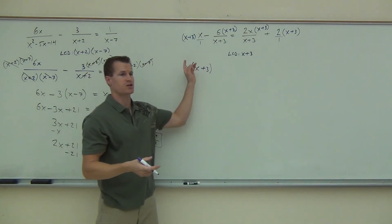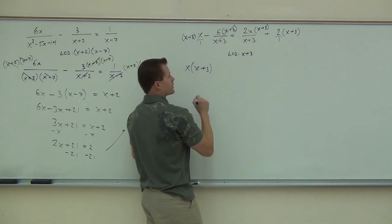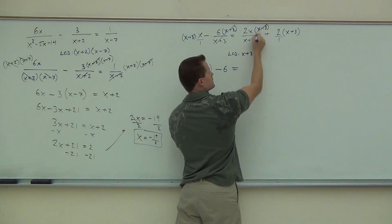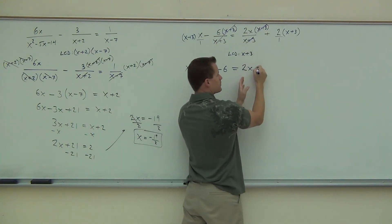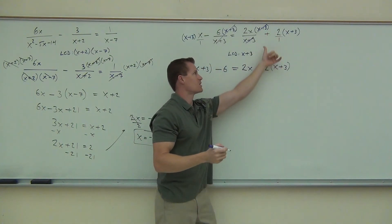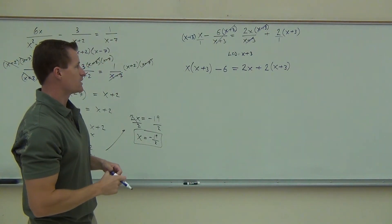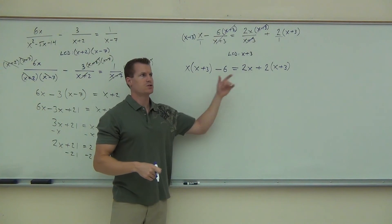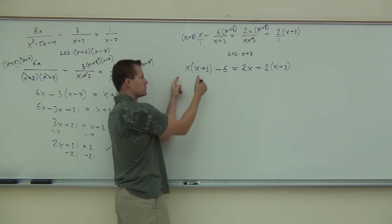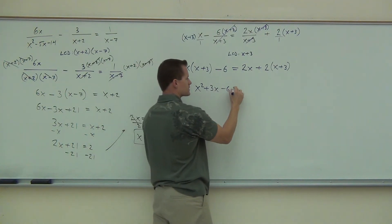Nothing simplifies there. How about the next fraction — does anything simplify? So what am I going to have? I'm going to have 6. Okay, that's the left side, and I have an equal sign. Here I also see the X plus 3s are gone — I get 2X, and then I get plus 2 times X plus 3. I'm not distributing it in my head because I want to make sure that this sign, whatever it is, gets distributed. That's kind of an important process.